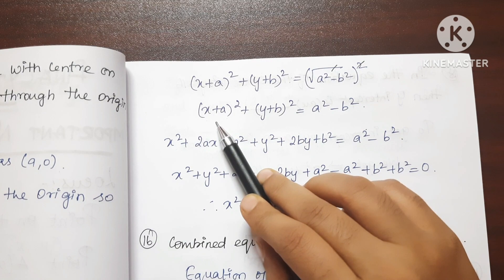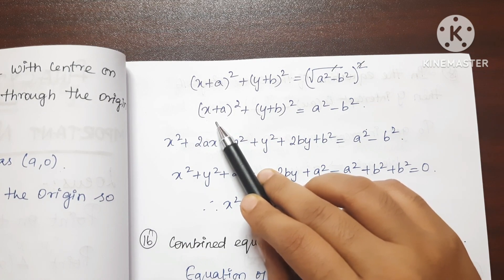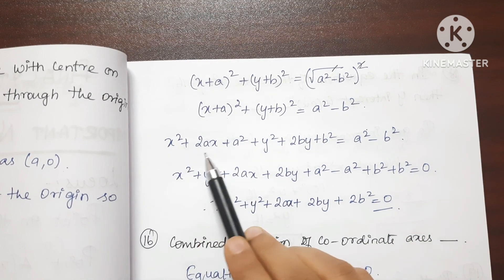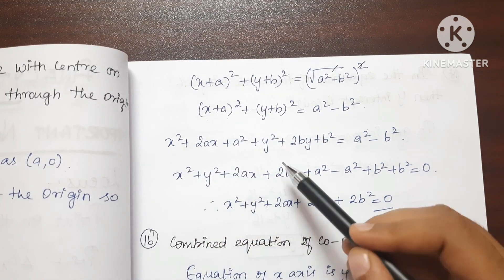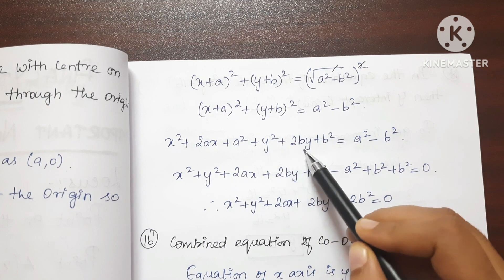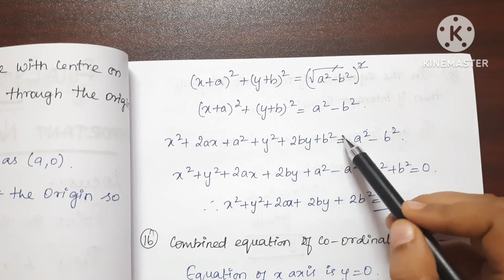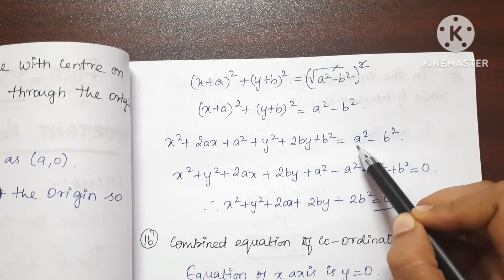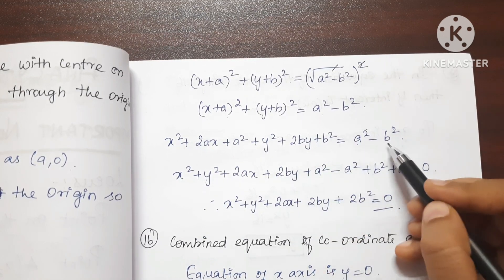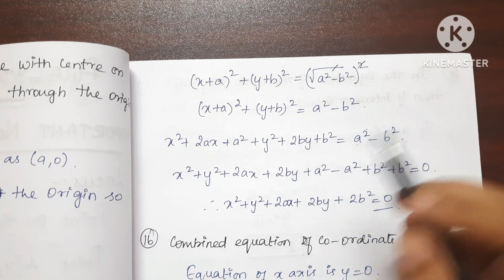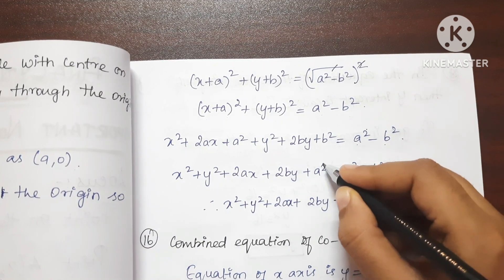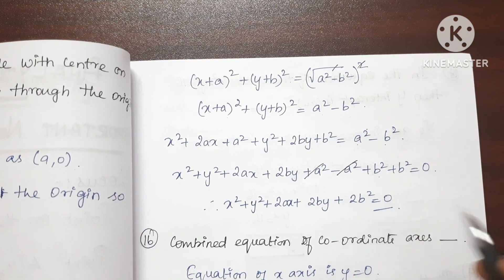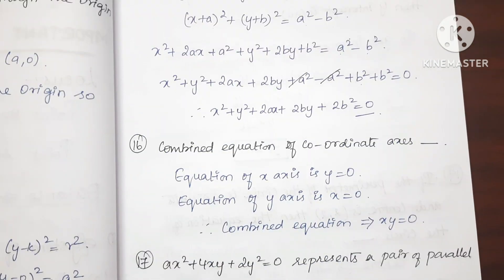Expanding the equation: x²+2ax+a²+y²+2by+b² = a²-b². The a² terms cancel, leaving x²+y²+2ax+2by+2b² = 0.